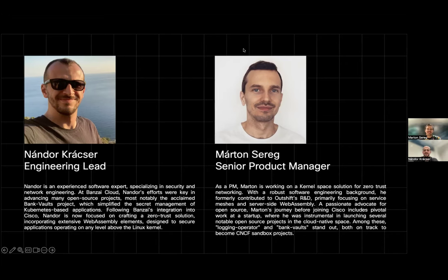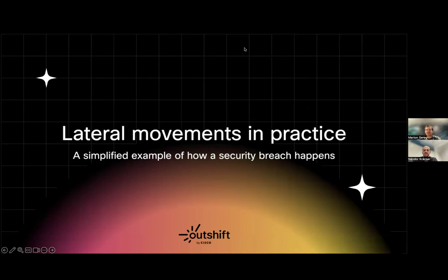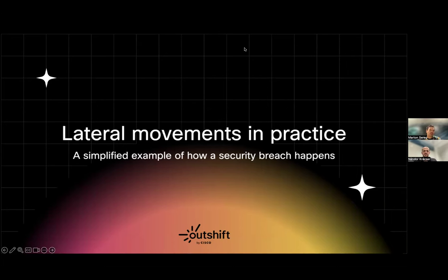Okay, let's get started. Let me start with a simple example of a hypothetical attack. This is a simplified example of how a security breach can happen — not a concrete example like an existing breach, rather a simplified example to make it easier to understand what we're aiming at. This example contains a lateral movement. A lateral movement means that when an attacker gets into a system, they usually spend some time there and are trying to move laterally within the network or infrastructure. In the end, the actual exfiltration of data happens sometime later after the attacker goes through some steps.